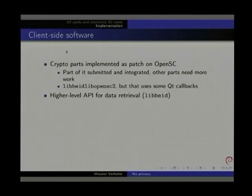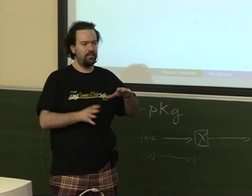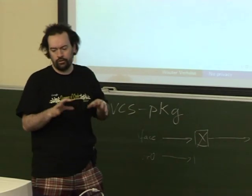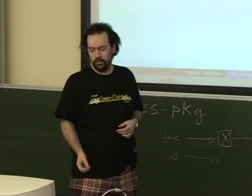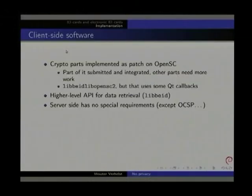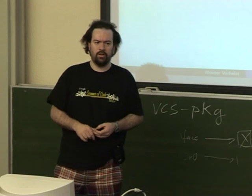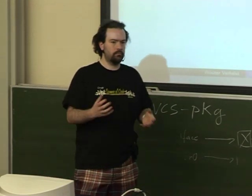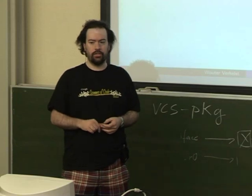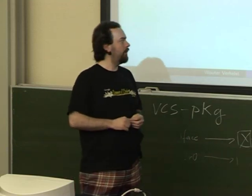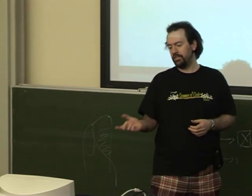There is a higher-level API in LibBEID for data retrieval — they used to call this libbeid, which is a fairly reasonable name. The server side has no special requirement — it's just plain old SSL. If you want to set up a website using EID, all you need to do is set up SSL certificate authentication, which is fairly standard. The only problem is that since there are already 5 million of these cards issued, there are also quite some revocations.